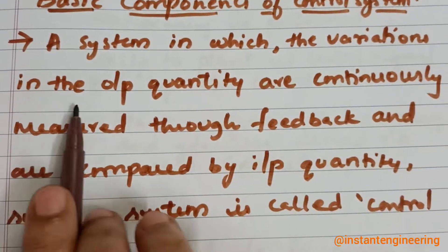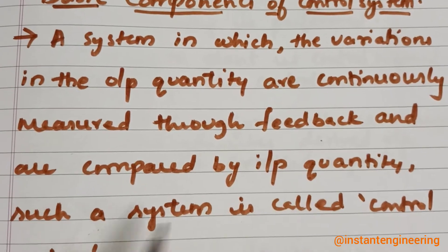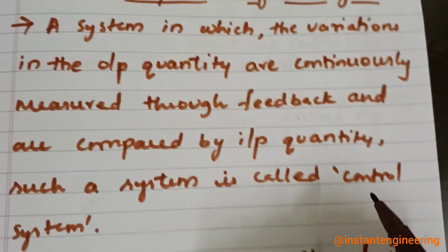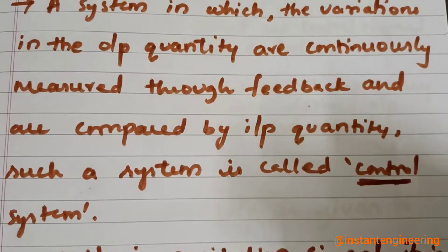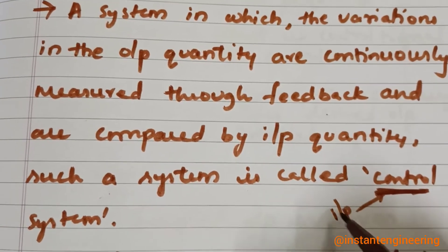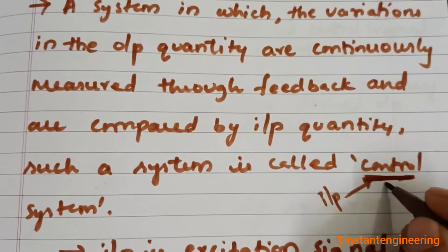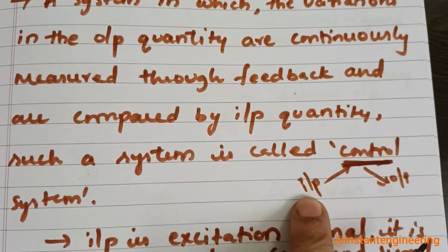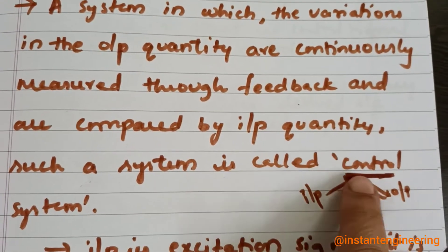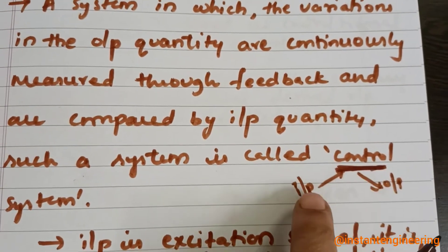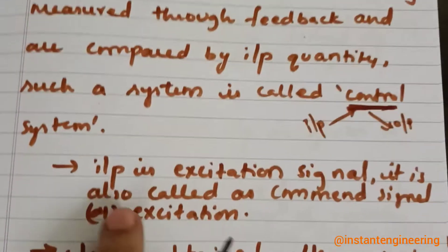A control system is a system in which the variations in the output quantity are continuously measured through feedback and are compared with the input quantity. Basically, control means somebody is giving you an input — some command — and you are controlling based on that. The output is obtained, and the comparison of the feedback and the input is what is called a control system.